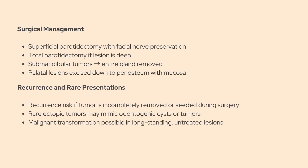Surgical excision is the standard of care. If the tumor is in the superficial lobe of the parotid gland, a superficial parotidectomy is usually done with preservation of the facial nerve. For deeper lesions, a total parotidectomy may be needed. In submandibular tumors, the whole gland along with the tumor is typically removed. For palatal lesions, you excise down to the periosteum, including the overlying mucosa. While recurrence is uncommon with proper treatment, it can happen, especially if the tumor isn't fully removed or if there's seeding during surgery.